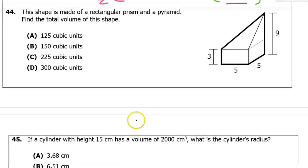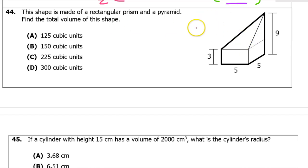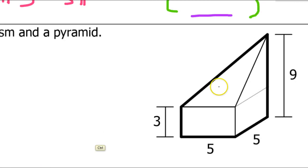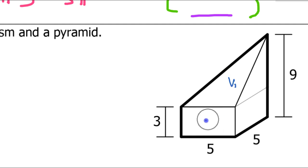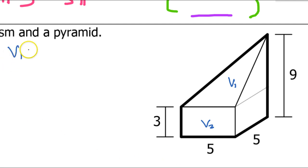Number 44: this shape is made up of a rectangular prism and a pyramid — find the total volume. I'll call the pyramid on top volume 1 and the rectangular prism on the bottom volume 2.